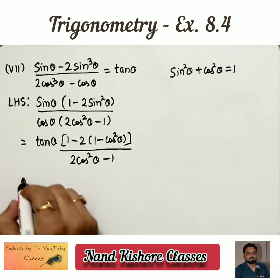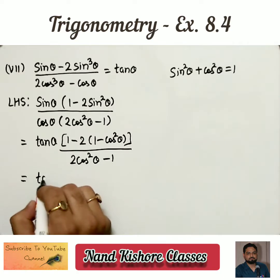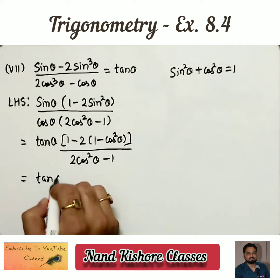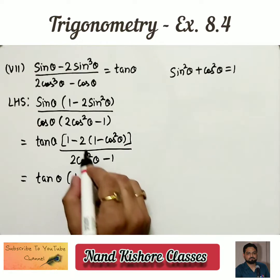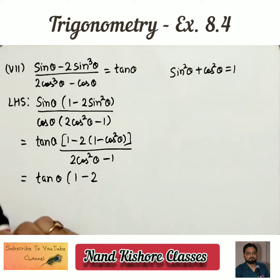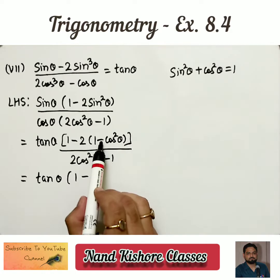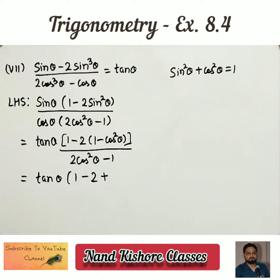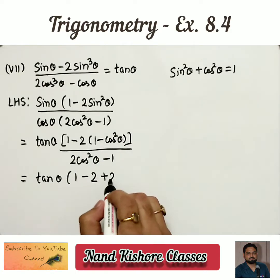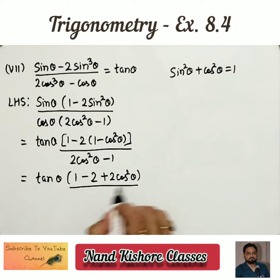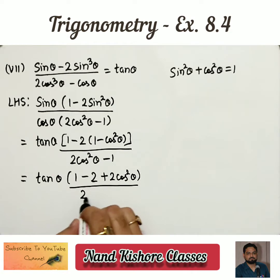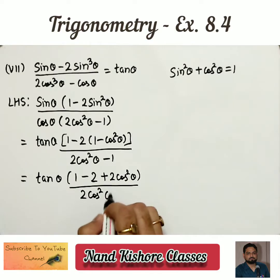In the denominator we have 2 cos square θ minus 1, written as it is. Opening the bracket in the numerator: 1 minus 2 times (1 minus cos square θ), giving us minus 2 plus positive 2 cos square θ. The denominator remains 2 cos square θ minus 1.